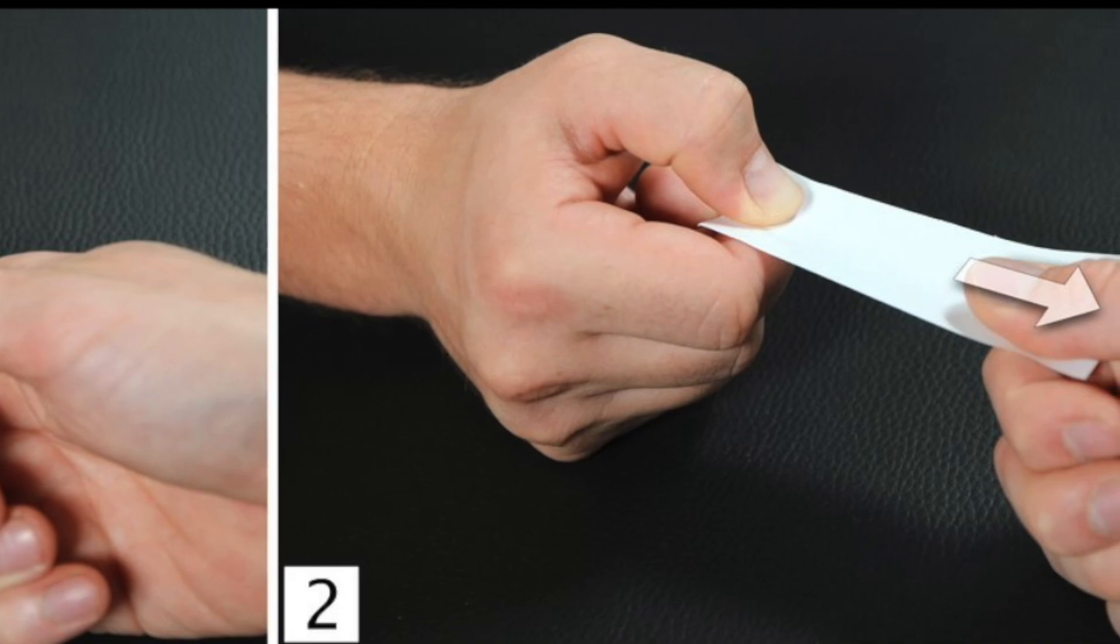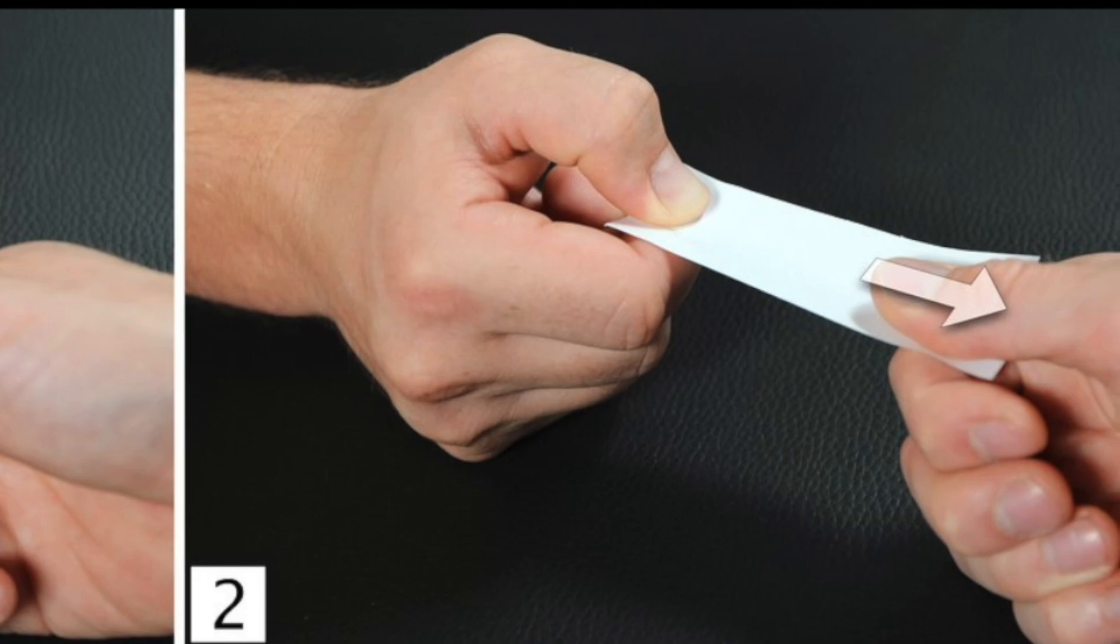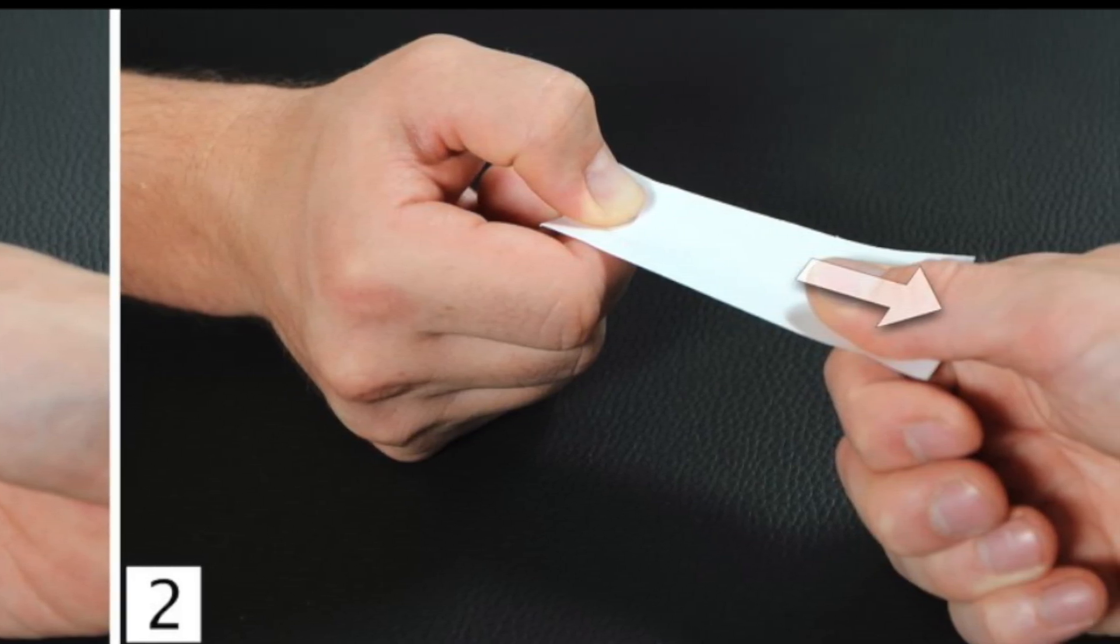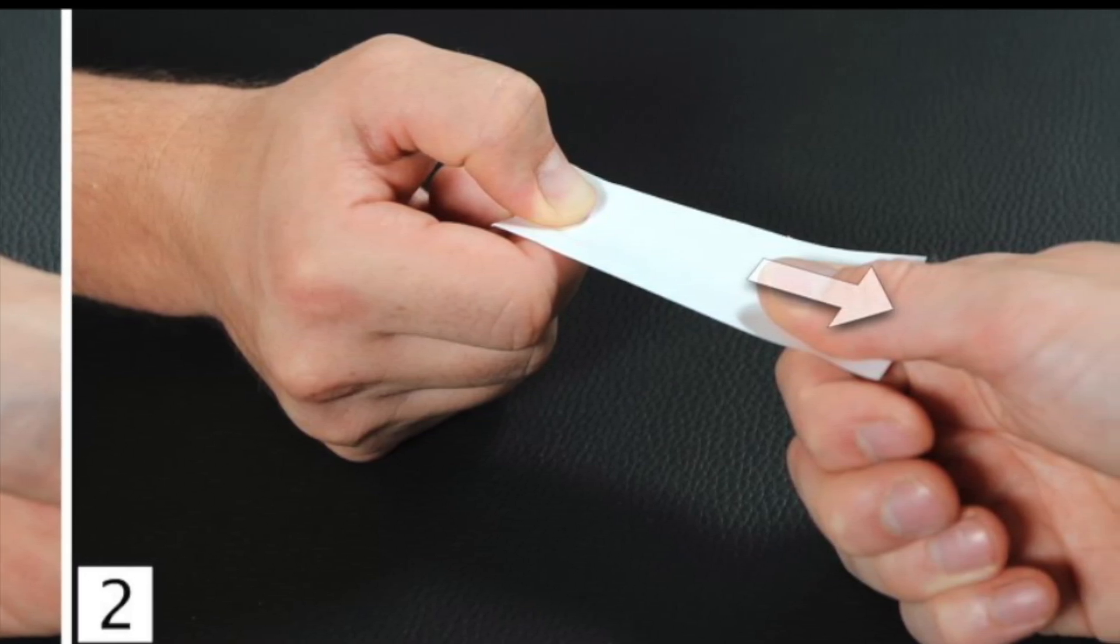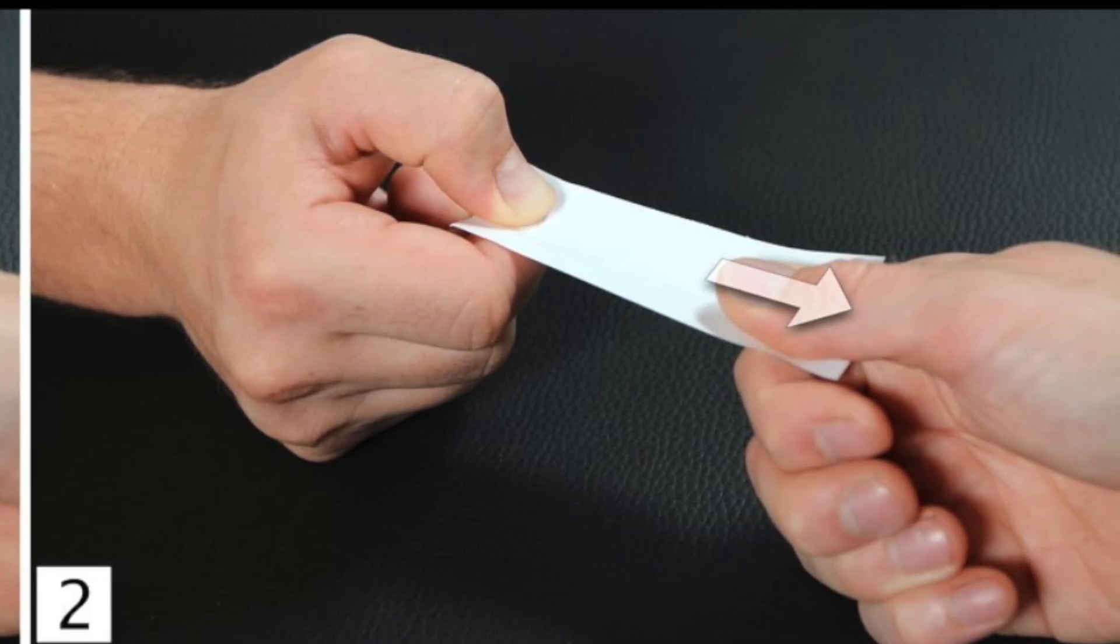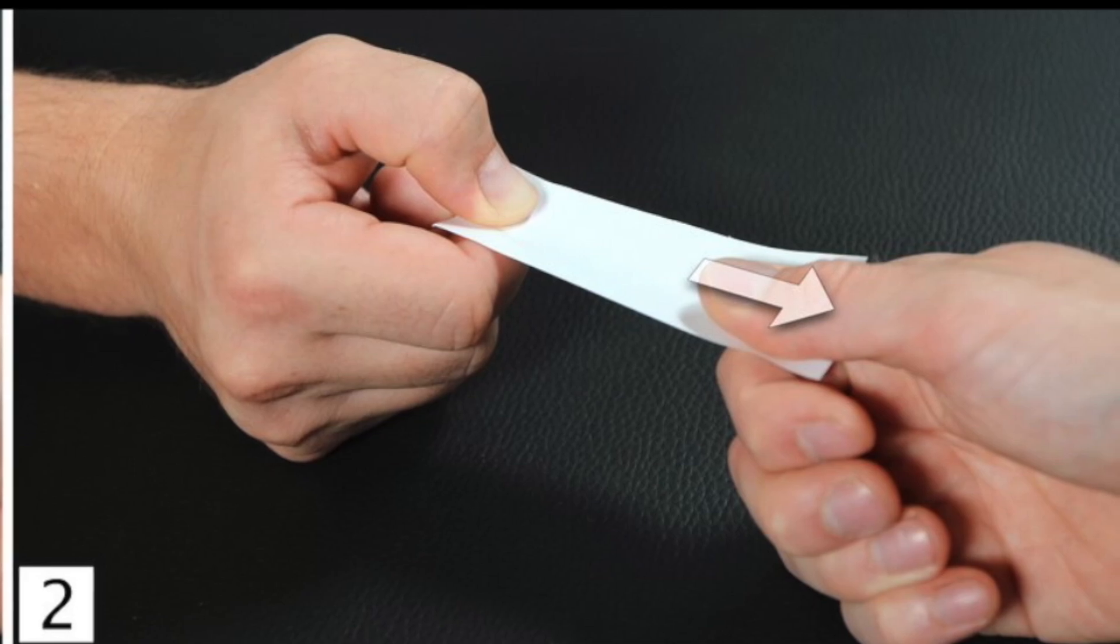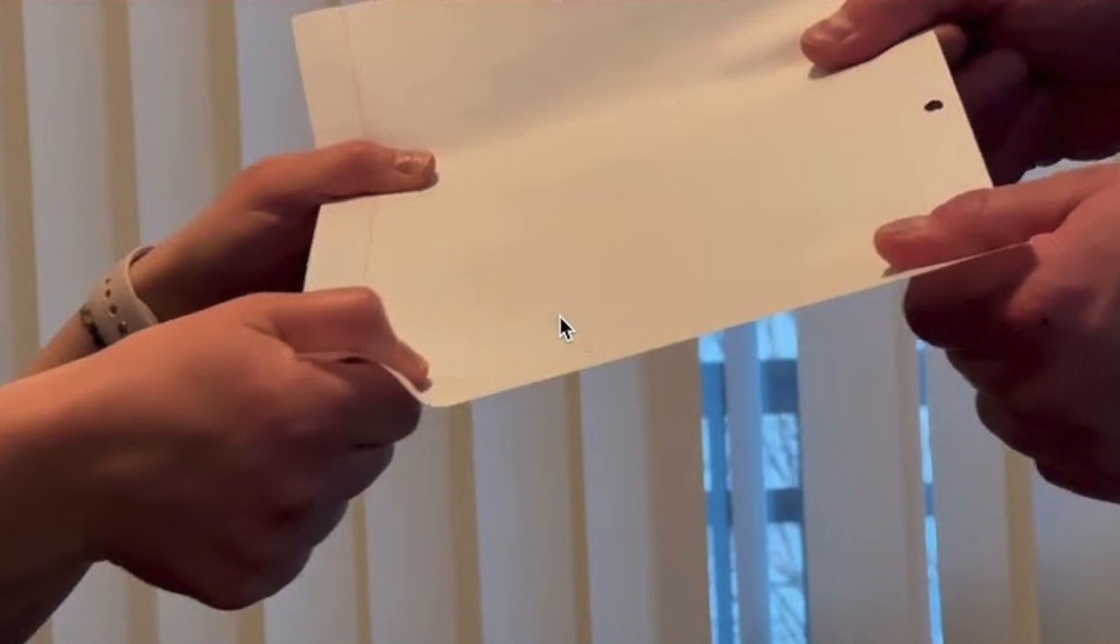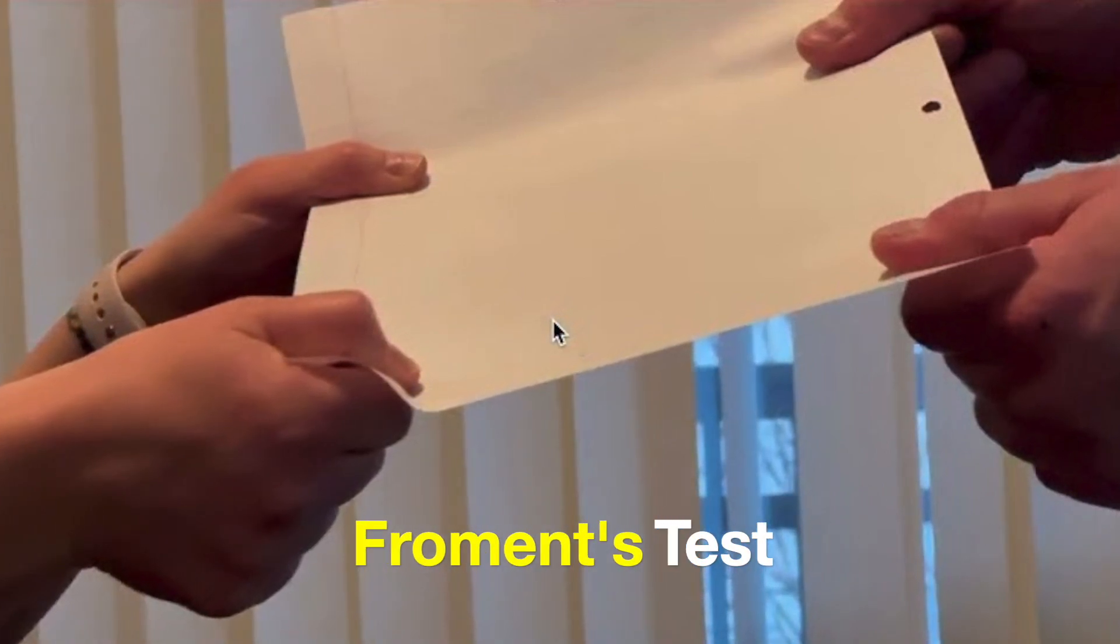Flexing the IP joint of the thumb uses the muscle flexor pollicis longus, a muscle of the forearm that is innervated by median nerve. Even flexor pollicis brevis is innervated by median nerve. So instead of adducting the thumb, he flexes the thumb at the IP joint or even at the metacarpophalangeal joint. At the IP joint it's flexor pollicis longus; at the MCP joint it's flexor pollicis brevis.